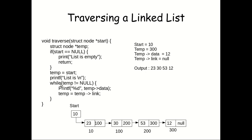Finally this loop ends — since temp is now null, the while condition 'temp not equal to null' is false, so it breaks out of the loop. The final output is 23, 30, 53, and 12. In this way you will be able to traverse a linked list. Thank you for watching this video — please like and subscribe.